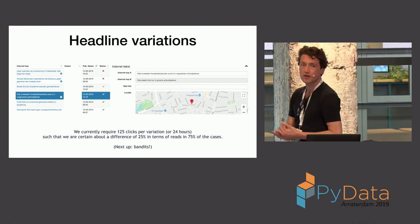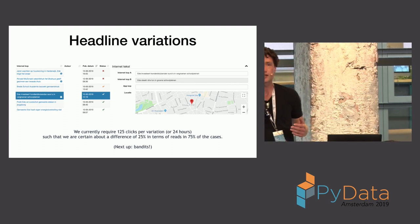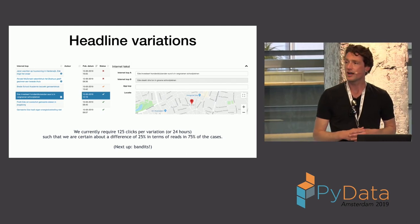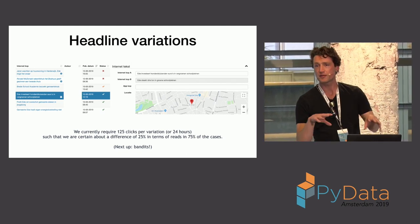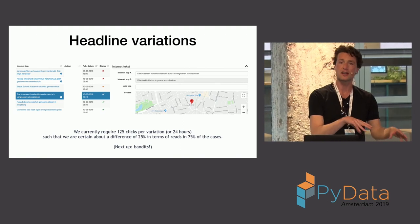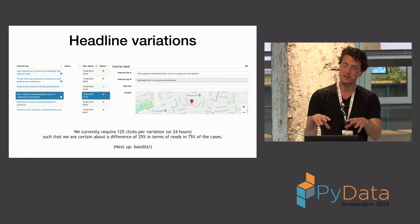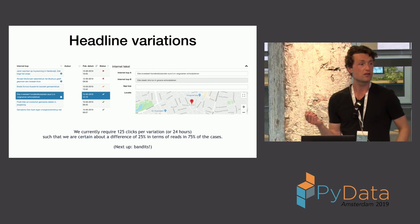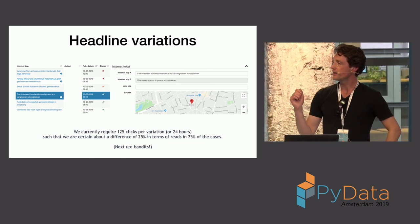And we, you know, this screams for a bandit approach, of course, to online find out what is the best model. But we currently have separated, like surfing the headlines and collecting the metrics. So, we didn't integrate that yet. So, instead we use an old school statistic saying that, you know, after a couple of clicks on each of the variants, we are certain,